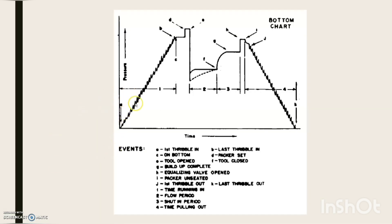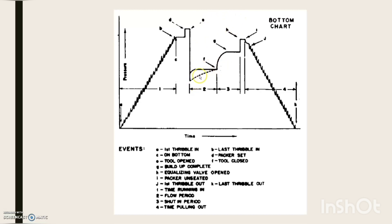Keeping an eye on the series of events correlated with the pressure curves: at A there is the first thribble in — a thribble being three joints of pipe attached together. At B is the last thribble entry. At C the tool has reached downhole at the preset location. At D the packer is set and there is a surge in pressure due to squeeze pressure. At E the tool is opened and there is a sharp pressure decline. The solid line denotes critical flow and the dotted line denotes non-critical flow.